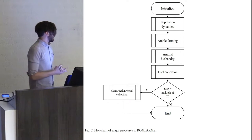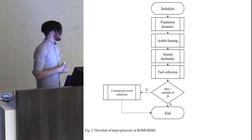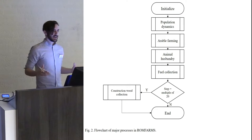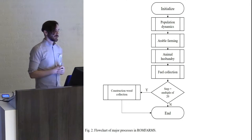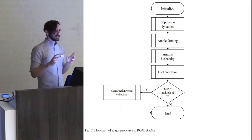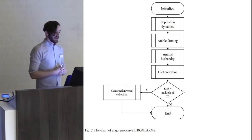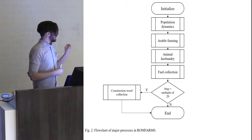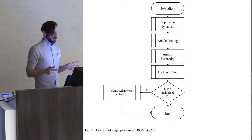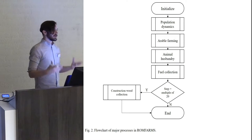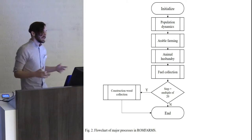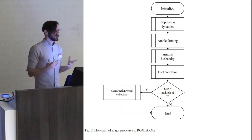This is an overview or flowchart of the main submodels and processes used in my model, beginning with the initialization which sets up the landscape and creates the agents. The first submodel is a model of population dynamics within the settlement. The settlements then undertake arable farming, they then undertake animal husbandry, and they also collect fuel from the landscape. Depending on the step number, one step equaling one year, the settlements will also be required to rebuild their houses. Houses in the region are built from wood and it is a very wet landscape - the wood doesn't last much more than 20 years or so.